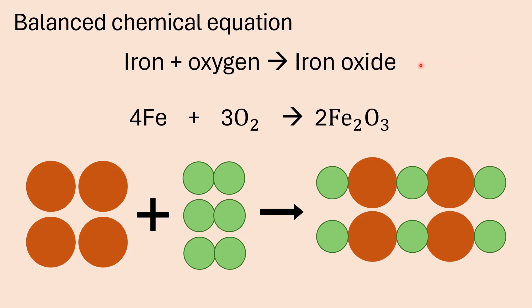The word equation is: iron plus oxygen forms iron oxide. The balanced chemical equation is: Fe + O2 → Fe2O3. So the formula for iron oxide is Fe2O3. If you draw this out in a pictorial equation, you will see that you need four iron atoms to react with three oxygen molecules to form two iron oxide formula units.